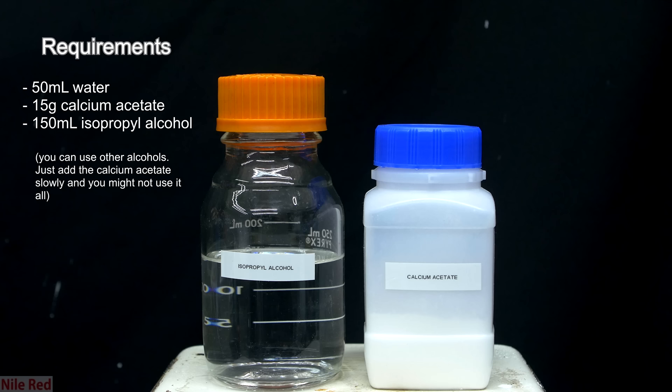For my preparation, I used isopropyl alcohol, but you can pretty much use any other alcohol as long as it doesn't have much water in it. So feel free to use something like methanol or ethanol instead if you can't get your hands on isopropanol. For my preparation, I used about 15 grams of calcium acetate, 50 milliliters of water, and about 150 milliliters of isopropanol.